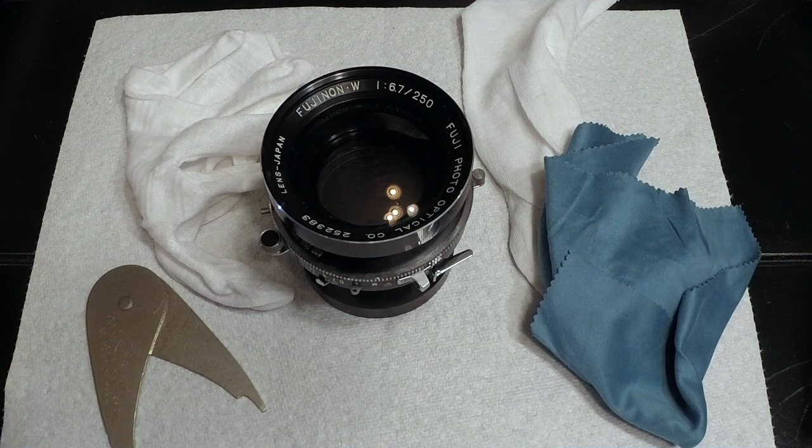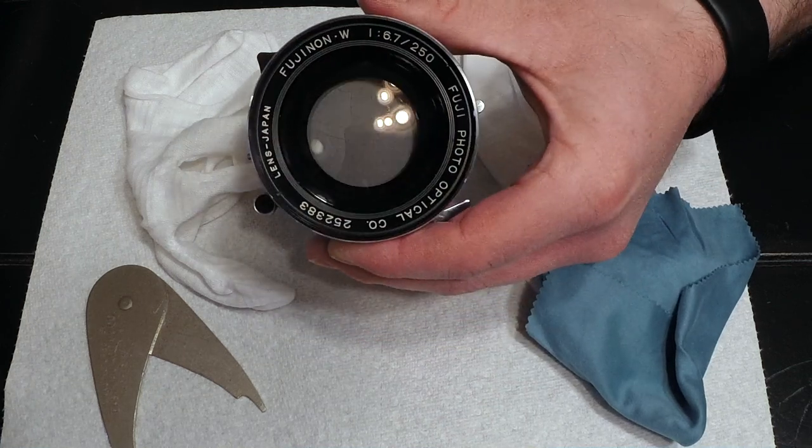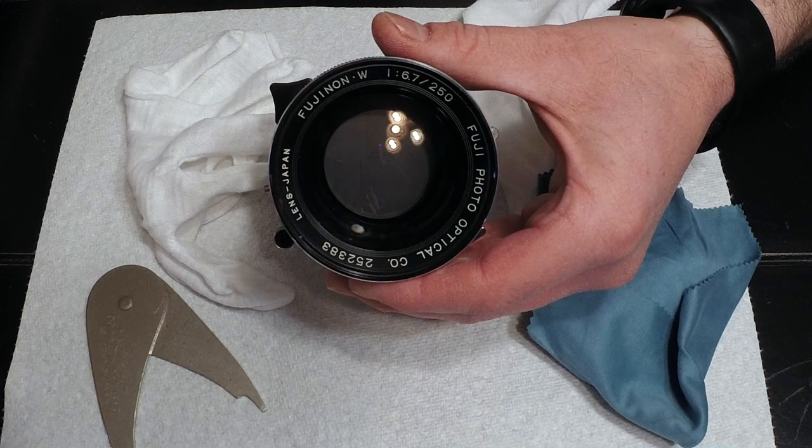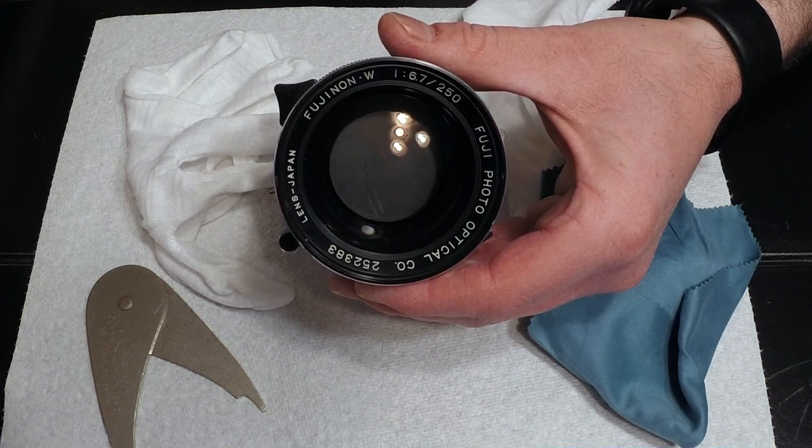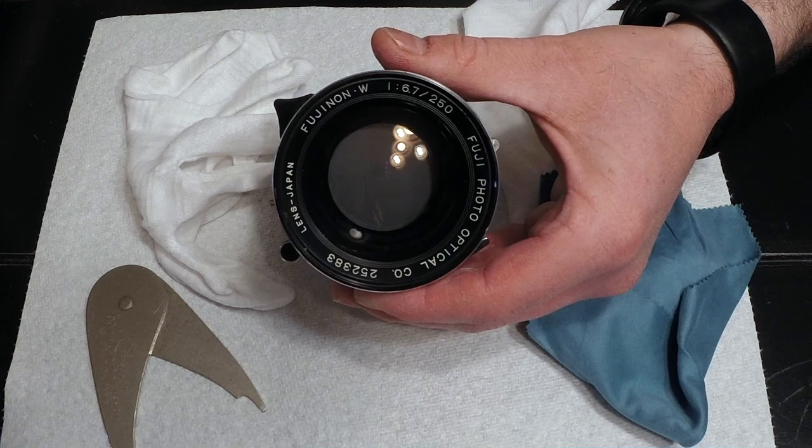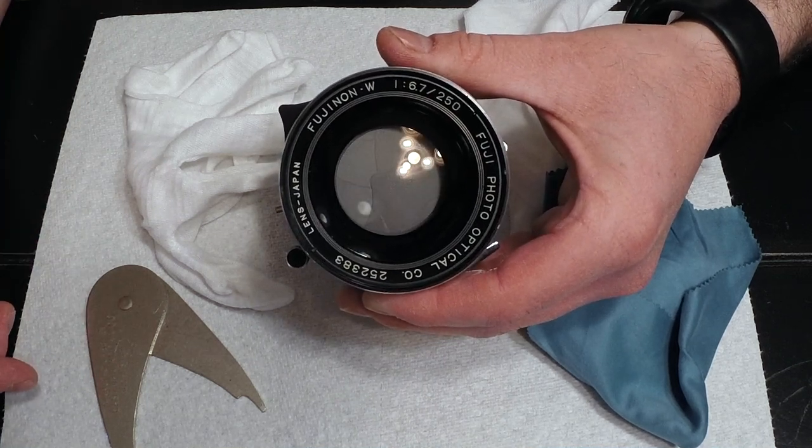I recently acquired this Fujinon W250 f/6.7 lens for my 8 by 10 camera. It's got an image circle of 398mm which is completely adequate to cover 8 by 10 with a good amount of movement. But when I got it, the lens elements on the inside are dirty, so I'm going to proceed to clean it here.